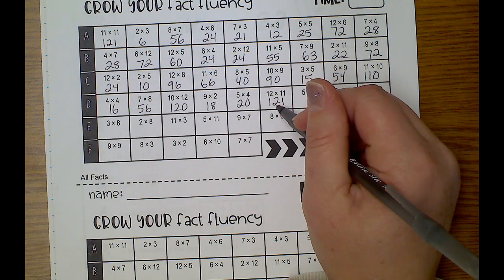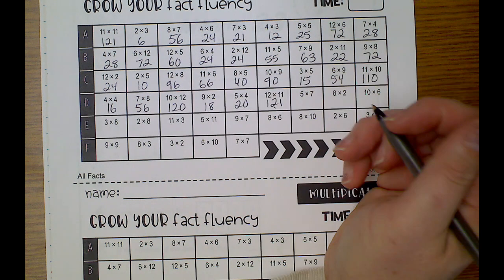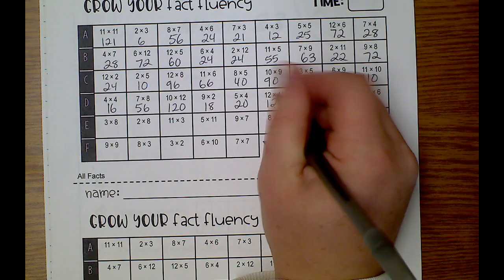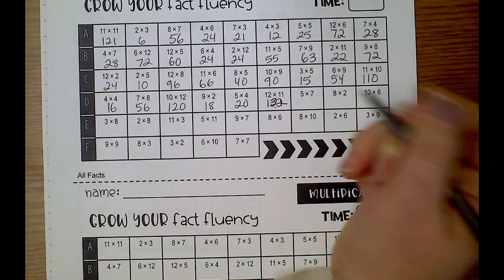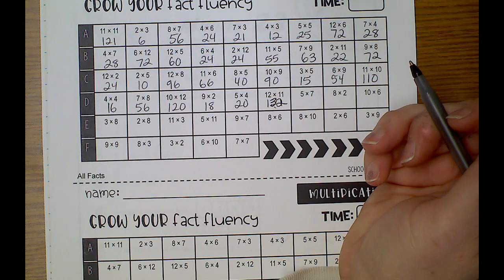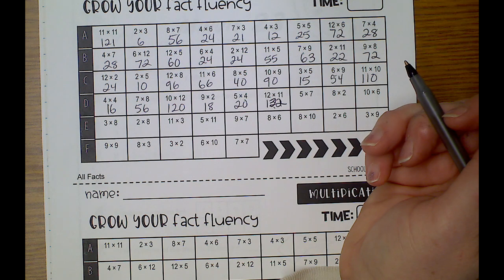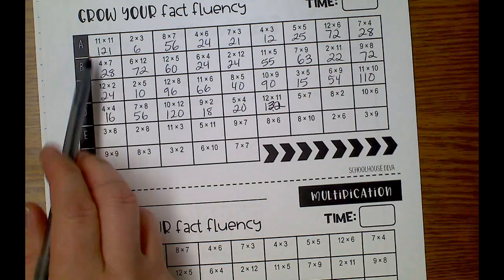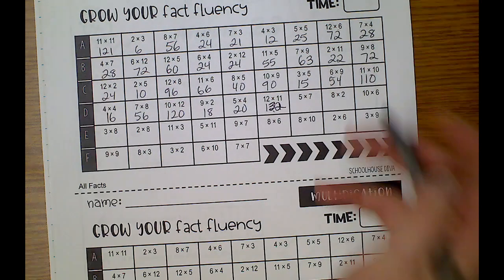Wait, is that 132? Yes, that's 132. Oops, did I mess that up? I thought I had 11 times 12 that I already got wrong. Oh, I did it up here 11 times. Okay, I'm fine.